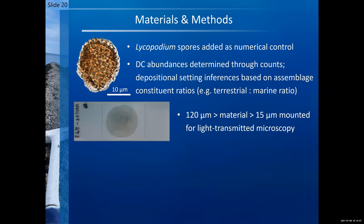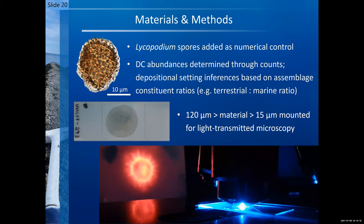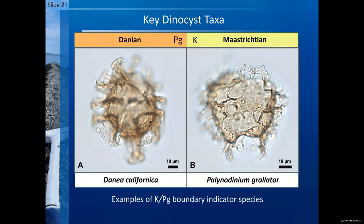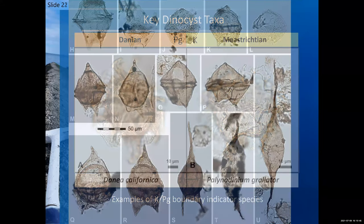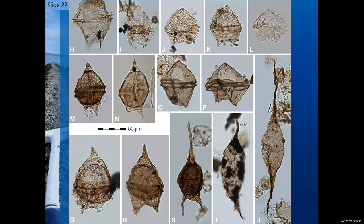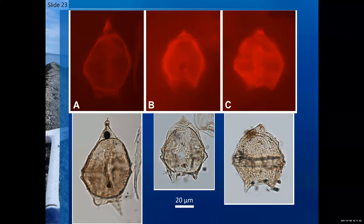Here's a smear slide made from material sieved above 50 microns but below 120, for light transmitted microscopy and also epifluorescence microscopy — the illumination of specimens revealing a proxy for autotrophic capabilities, meaning these organisms made their own food and didn't just hunt, if they illuminated. Two key index taxa: to the right, Palynodinium grallator for the upper Maastrichtian, and Damassadinium californicum for the basal Danian upsection.